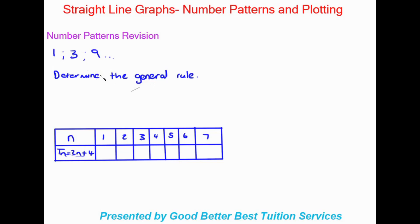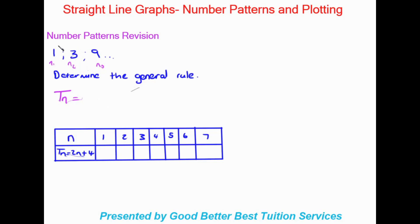Let's look at the example here — number pattern revision. We have this sequence that goes 1, 3, 9. They say determine the general rule. We write TN as our introduction to the equation or rule. We have to determine what is done to N, where N is each one of these terms: N1, N2, N3. Looking at 1 as N1, what did we do to get to N2? We times it by 3. And from N2 to N3 we also times by 3, so we can confirm the number pattern.